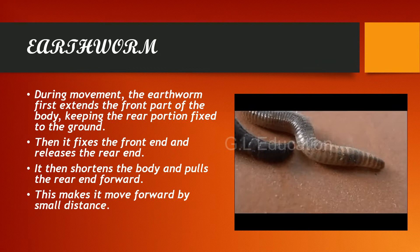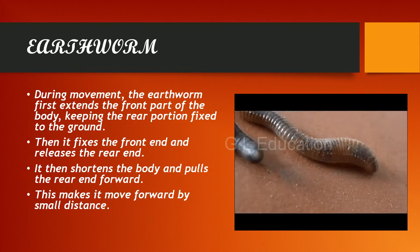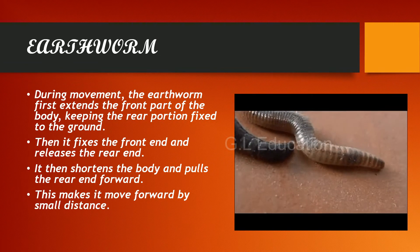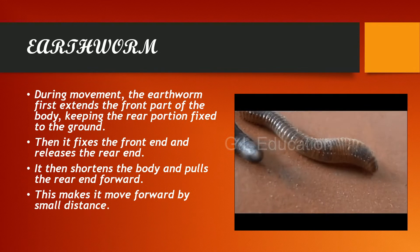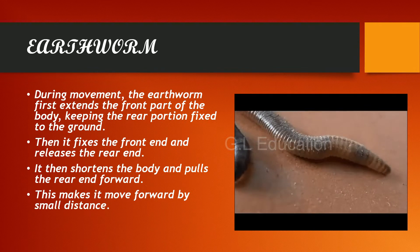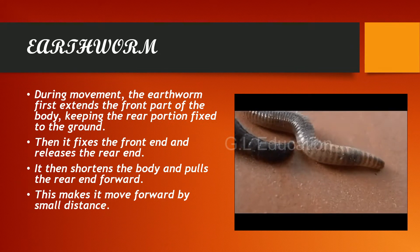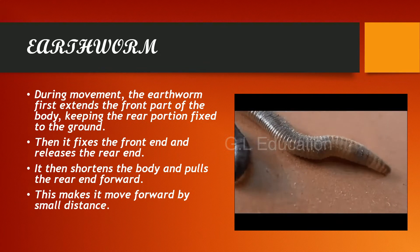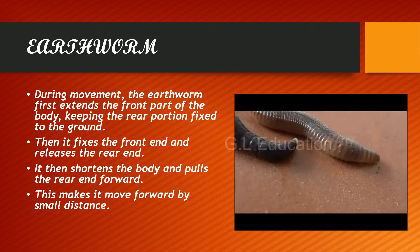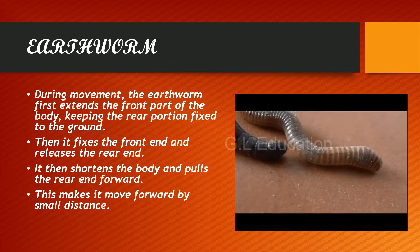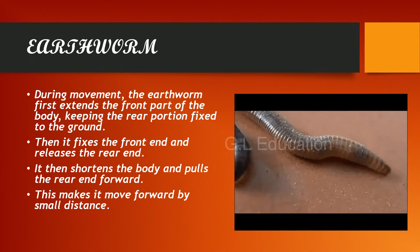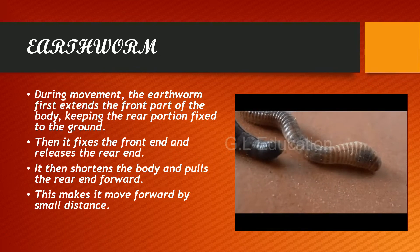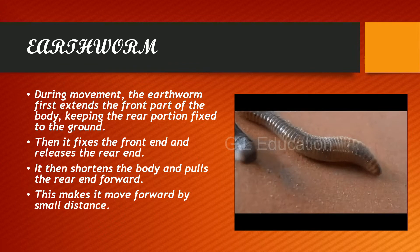During movement, the earthworm first extends the front part of the body, keeping the rear portion fixed to the ground. Then it fixes the front end and releases the rear end. It then shortens the body and pulls the rear end forward. This makes it move forward by a small distance.